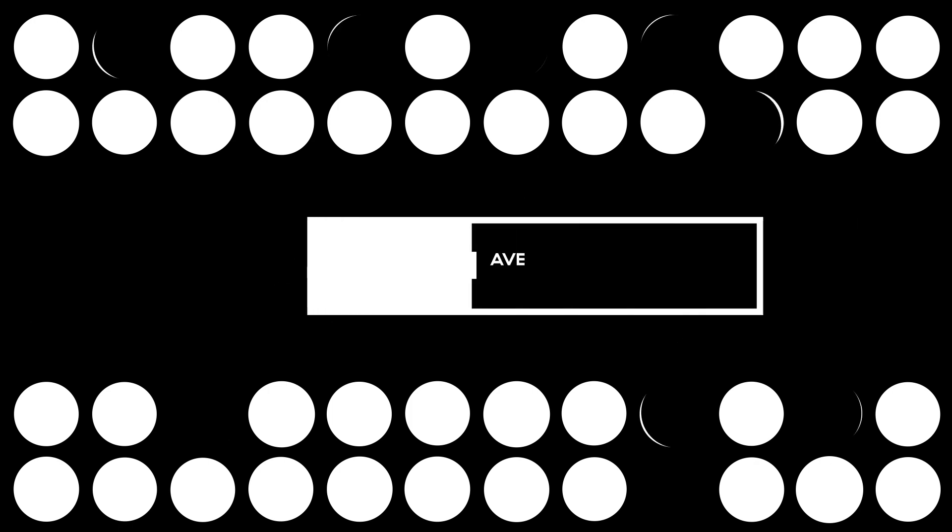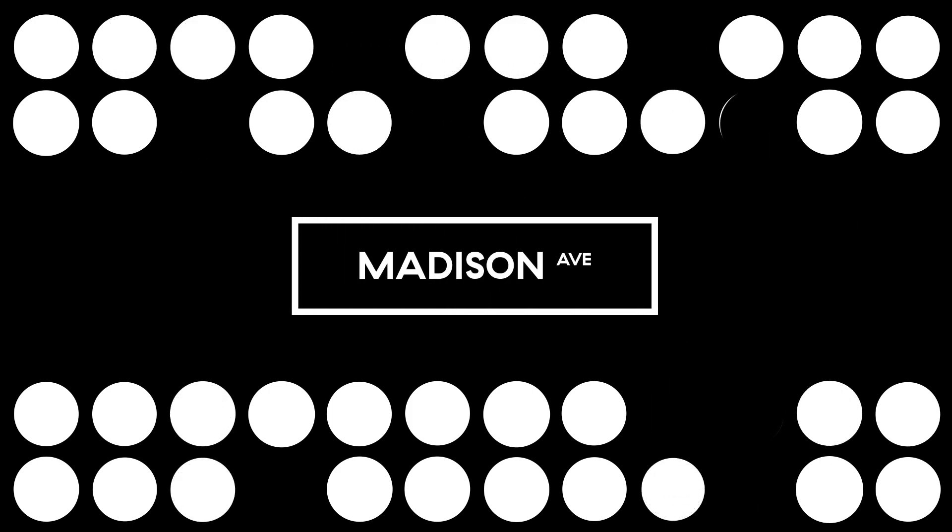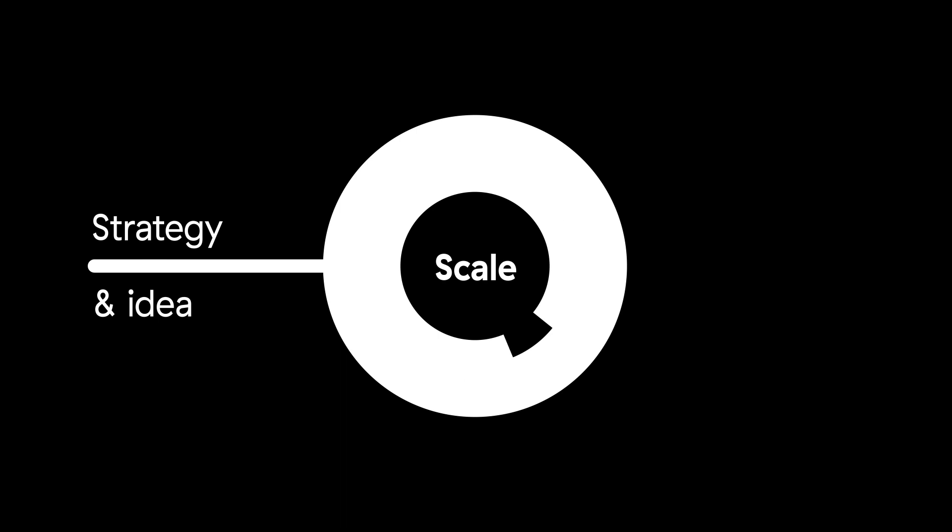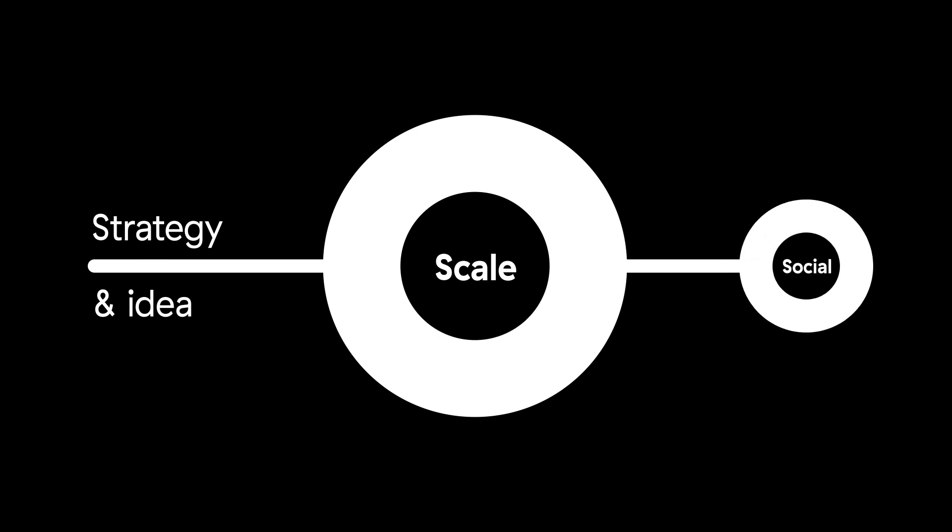Despite this, lead agencies continue to largely take the same approach to developing brand creative as they did when Madison Avenue ruled creativity. They come up with a big idea, execute that idea in 30 second and 15 second video and then adapt what's left over for lower priority channels like social.